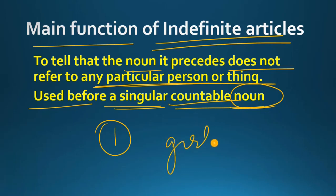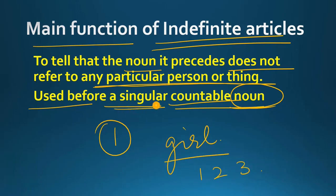For example, 'girl'. Now we can count one girl, two girls, three girls — so this is a countable noun. तो इस तरह की singular countable noun से पहले indefinite articles use होते हैं.